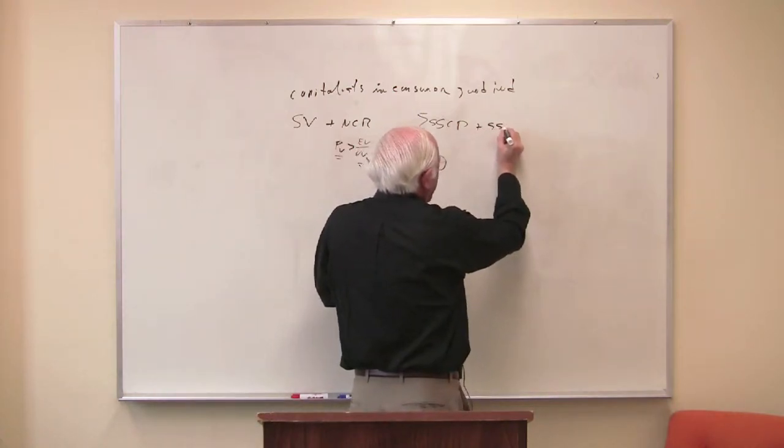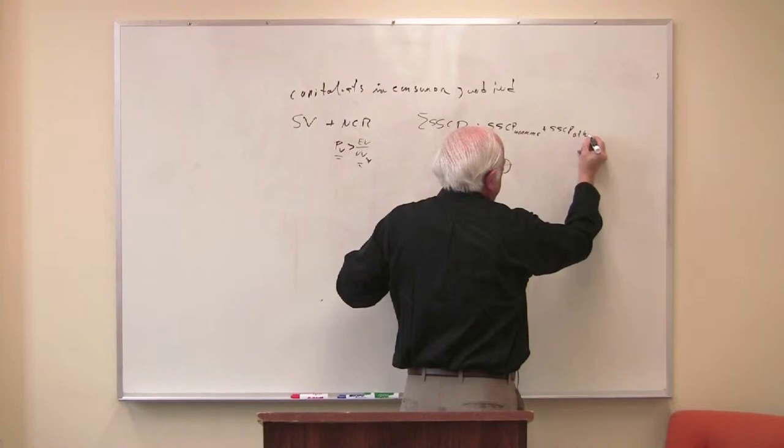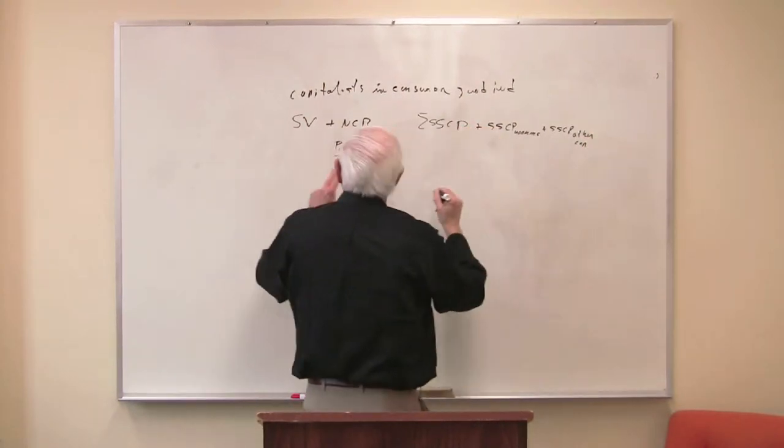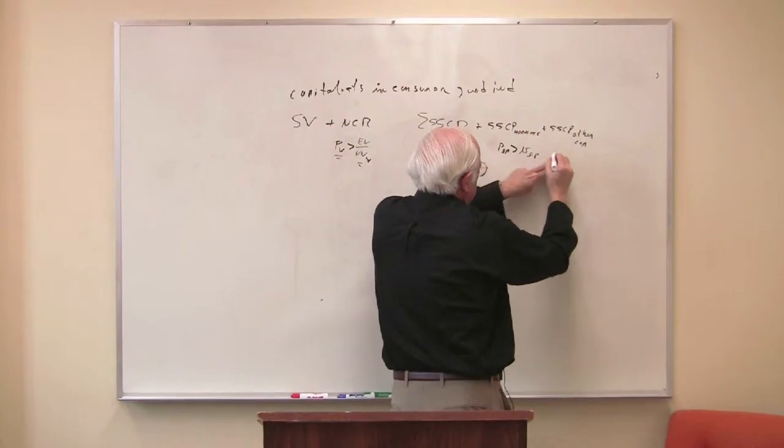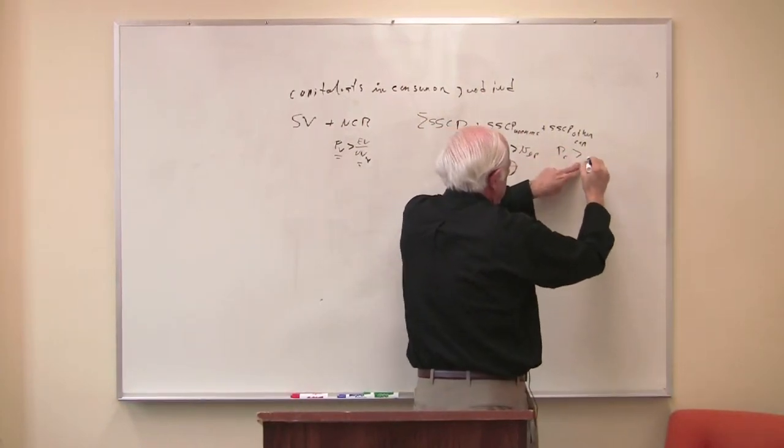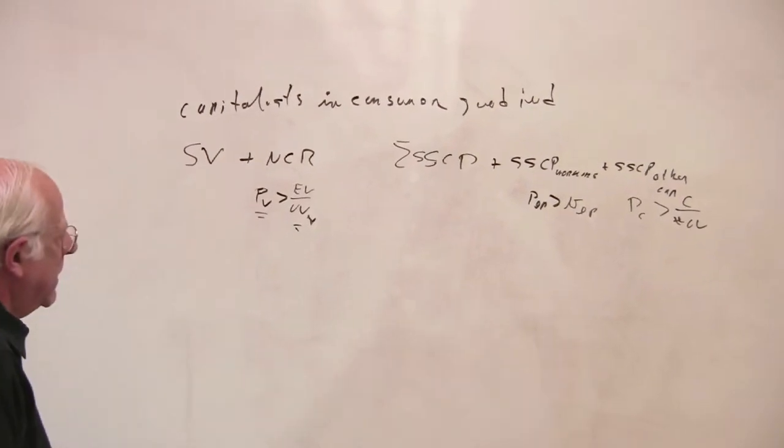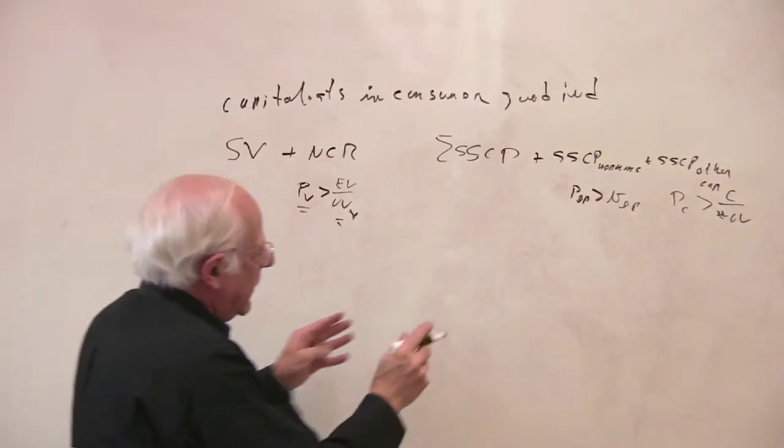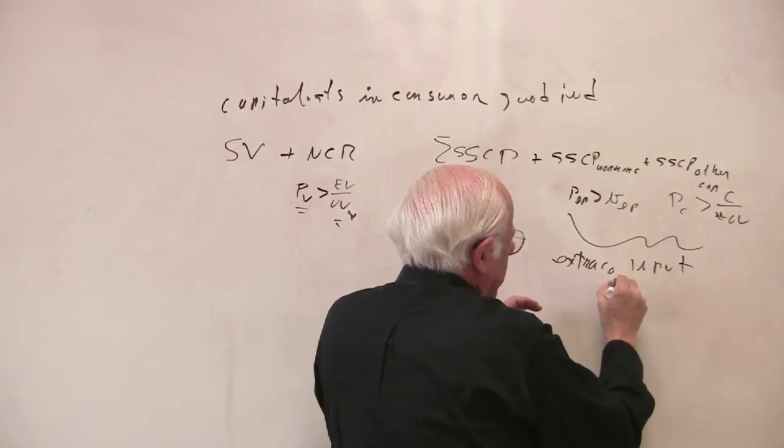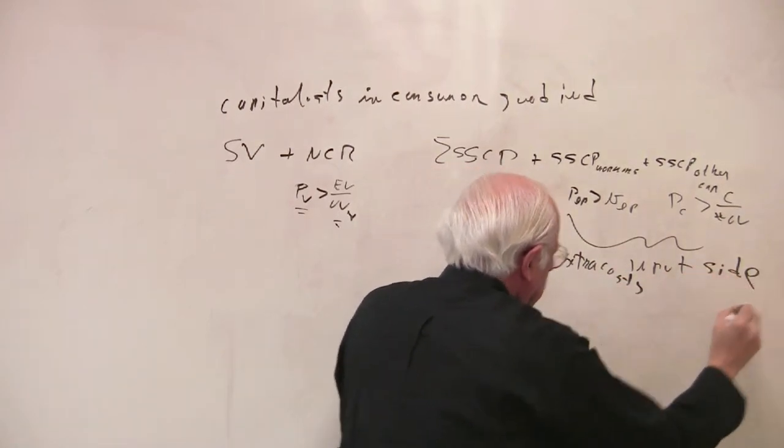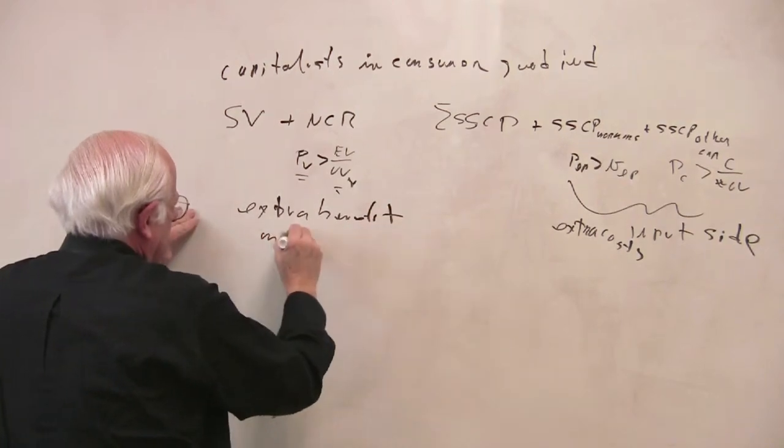But they have to make new payments to workers plus new payments to other capitalists. So this is the higher price of labor power greater than the V, little v, of labor power. This is the price of the C good greater than the unit value of the C goods. So what I've done here is take into account the costs on the input side, the extra costs, extra costs on the input side, and the extra benefit on the output side.